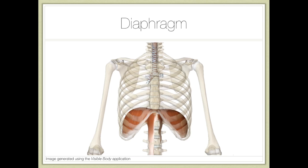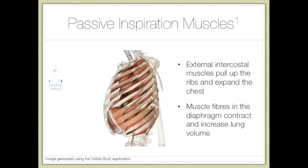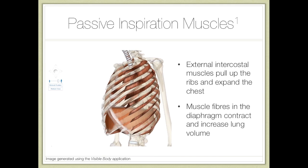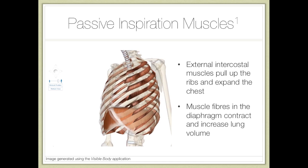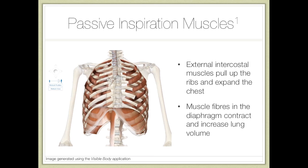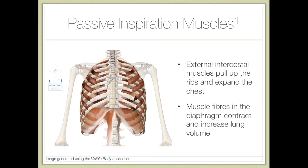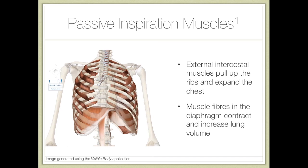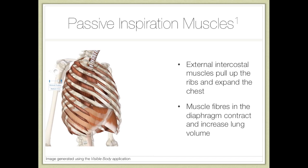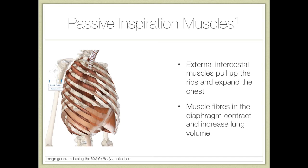The next muscle is the diaphragm — a wide but thin muscle located around the lower rib cage. During inspiration, the external intercostal muscles help to pull the ribs up and expand the chest, while the diaphragm contracts to increase lung volume. The diaphragm is the predominant muscle involved in inspiration, whereas the external intercostal muscles just help to expand the chest.